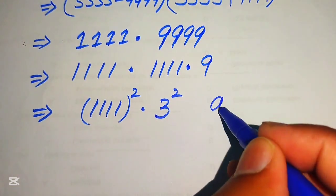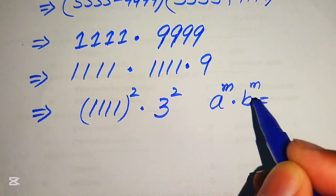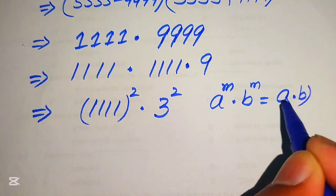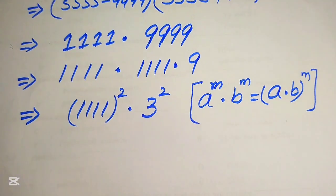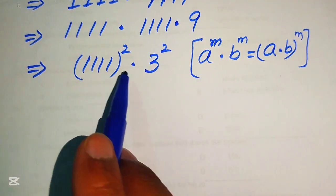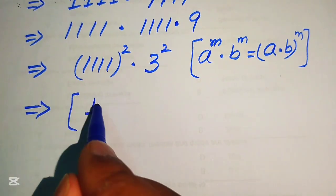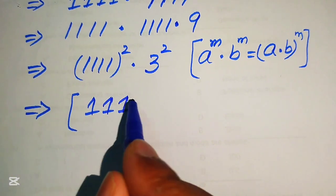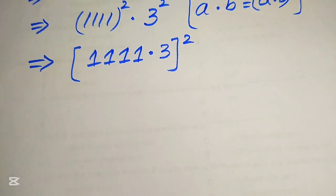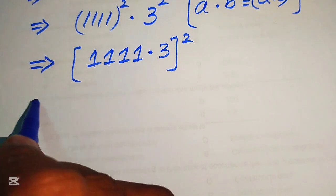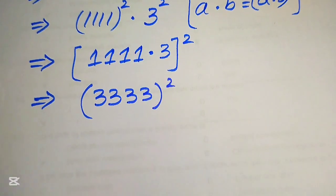We apply the exponent law: a to the power m multiplied by b to the power m equals (a times b) to the power m. Combining the two exponents, the expression becomes (1111 times 3) squared, which simplifies to 3333 squared.